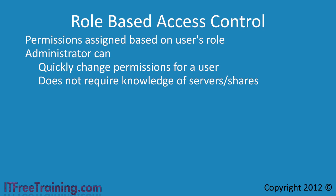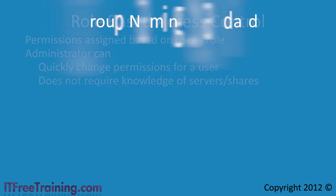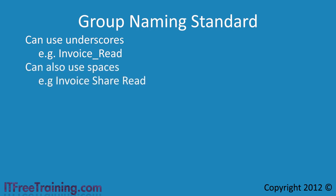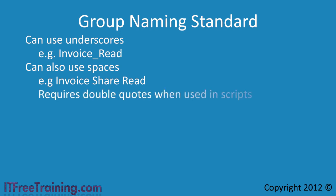In a later video I will discuss group strategy in more detail. When you start creating groups, you should spend some time considering the naming standard that you will use. In this case, invoice read is quite simple, but you could also have a group name such as invoice share read. I have used spaces rather than underscores. This will work just as well as underscores, but if the group is used in a script the group name will need to be enclosed in quotes. This does make scripting more complex, so a lot of administrators will avoid using spaces.